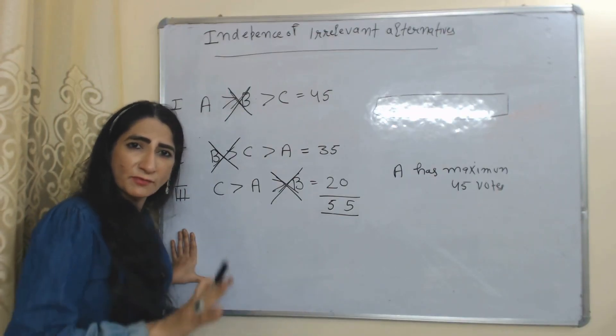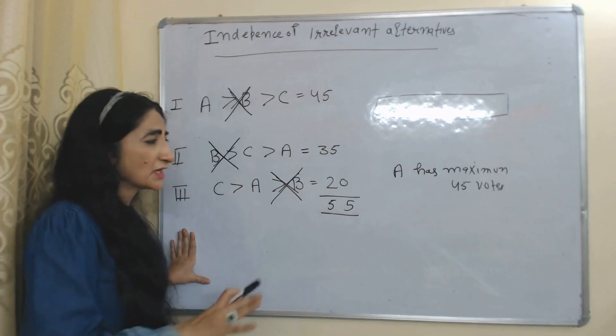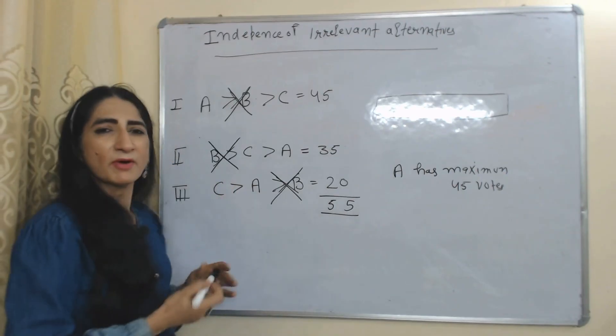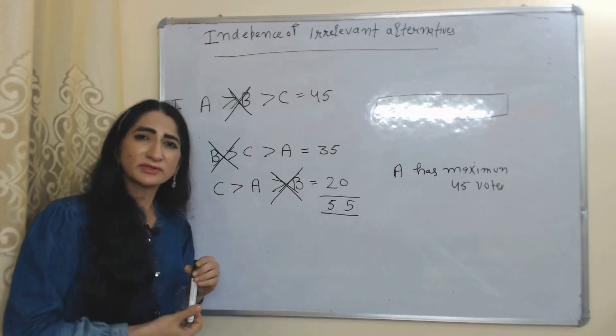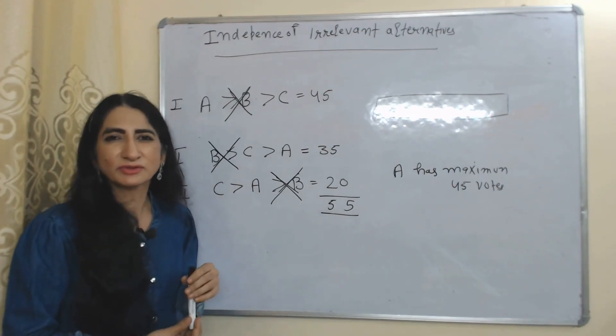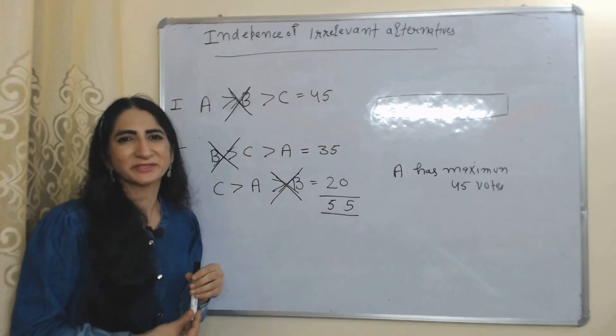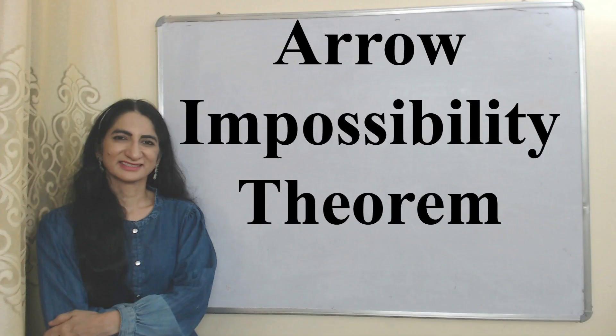So we can see that we are not able to make a valid social decision which will satisfy the preferences of all individuals. This is all about Arrow's Impossibility Theorem. Thank you so much for watching this video. Bye, take care.